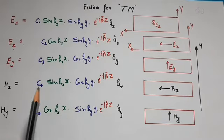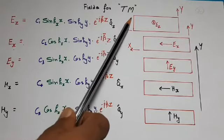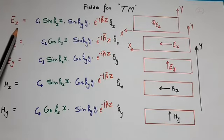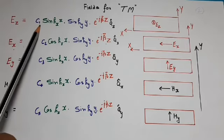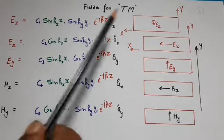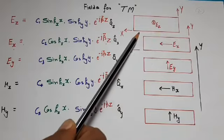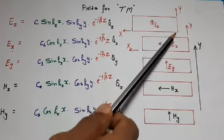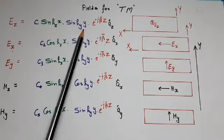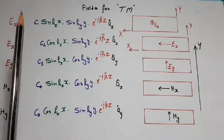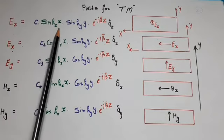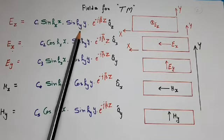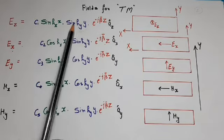Now the question is how to write expressions for all these field components. First we write field components for TM mode. Since propagation is in the z direction, we first write the field expression for Ez. Ez equals an amplitude constant C1. In a rectangular waveguide there is restriction in the x direction, so there is a standing wave in x; there is also restriction in y, so there is a standing wave in y as well. Using analogy with the parallel plane waveguide, the controlling phase constant in x direction is denoted by hx and in y direction by hy. The next question is whether these standing wave functions should be sine or cosine — this is decided by boundary conditions.